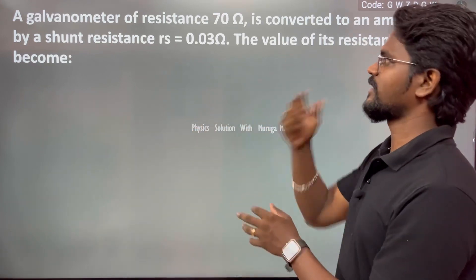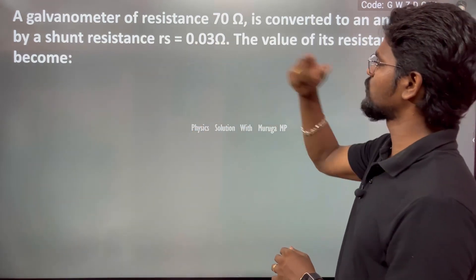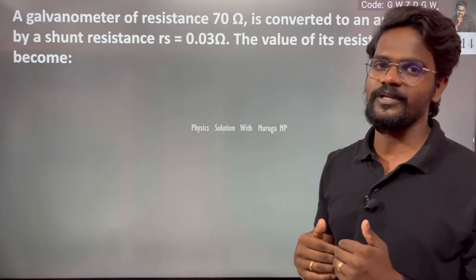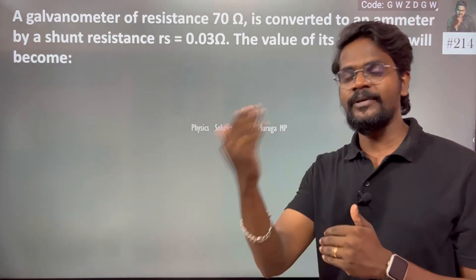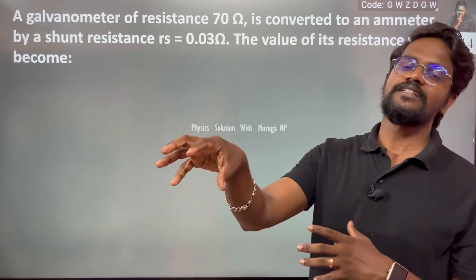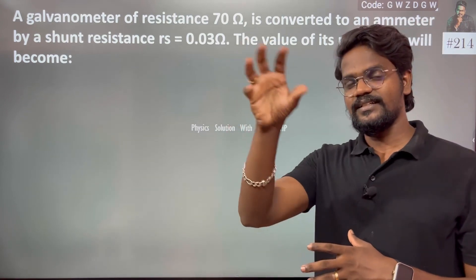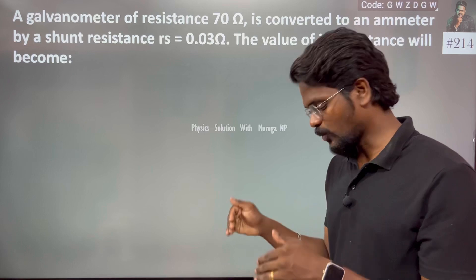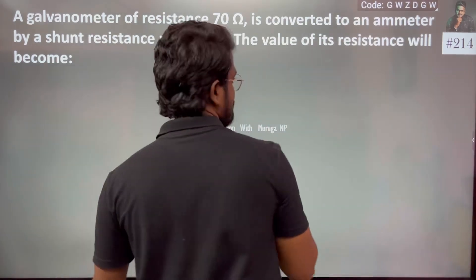The galvanometer of resistance 70Ω is converted into an ammeter. So what is the effective resistance?